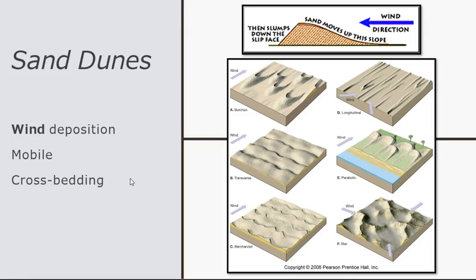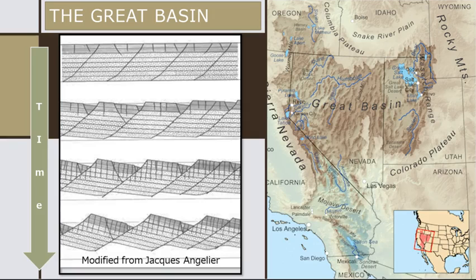Different types of dunes form based on the availability of sand and the direction or directions of wind. The Great Basin Desert is the largest of four deserts in North America. It's located in the rain shadow of several mountain ranges, including the Sierra Nevada Mountains here in California. Due to the combination of its geologic history and its climate, it shows the different stages of desert landscape evolution and provides excellent examples of typical desert landforms.